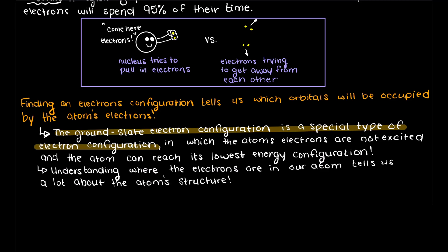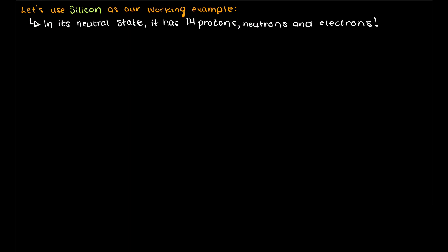So now let's go through the fundamentals for finding an atom's ground state electron configuration. Let's just pick a random atom and use that as our working example as we go through the rules here. Let's choose silicon. So in its neutral state, a silicon atom has 14 protons, and therefore, when neutral, has 14 electrons.